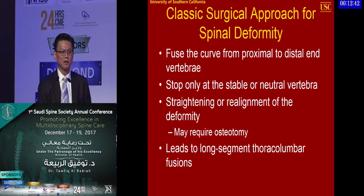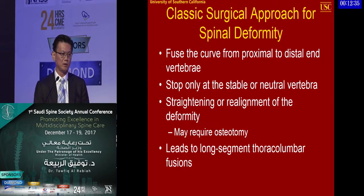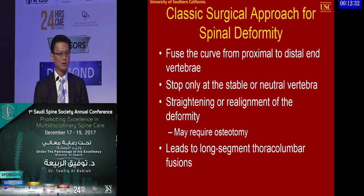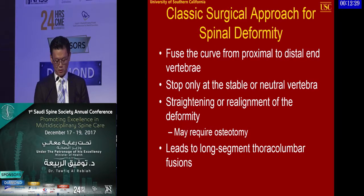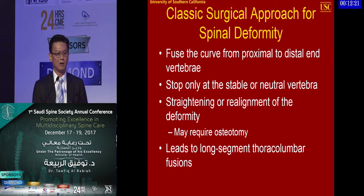The classic principles for adult deformity teach us to fuse from vertebra to vertebra, treating all the coronal segments. You want to avoid stopping in the middle or apex of the curve, and instead stop at the neutral or stable vertebrae. For deformity, you also want to think about how to restore alignment, and some of these may require osteotomy.